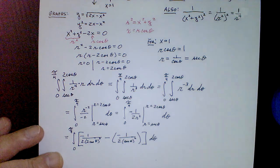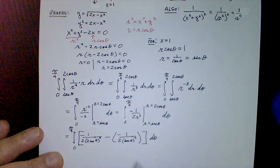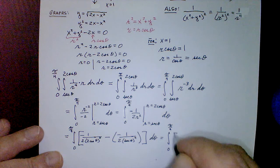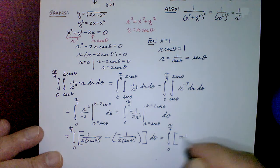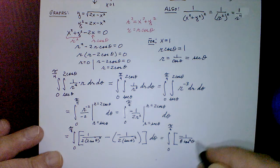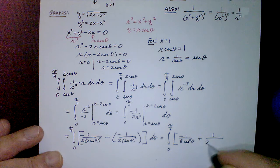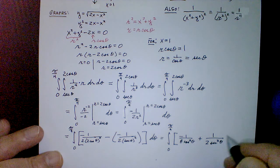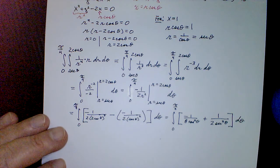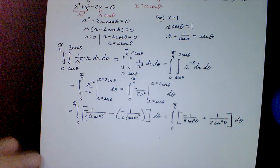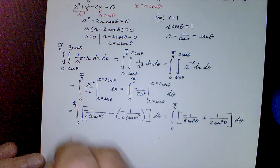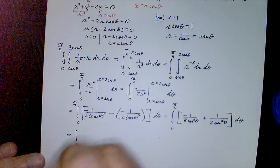After substituting, we get the integral from 0 to π/4 of: −1/8·cos²(θ) + 1/2·sec²(θ) with respect to θ. Note that 1/cos is sec, so the expression is written in terms of sec²(θ) for the second term.